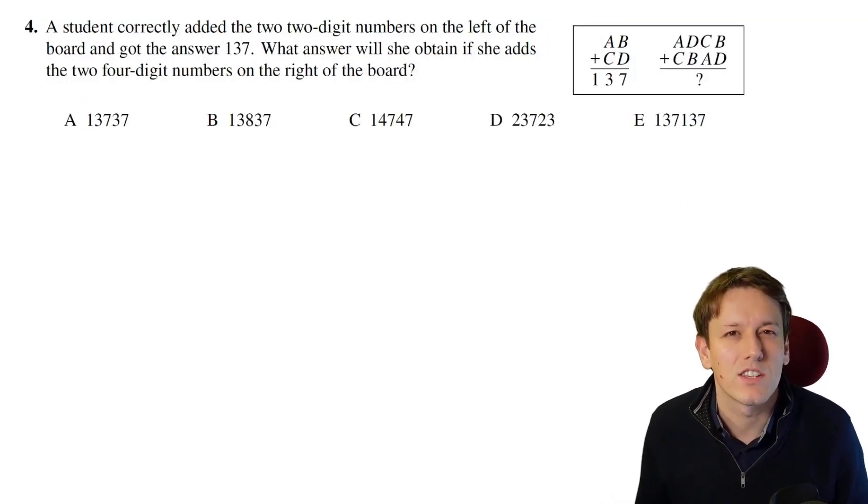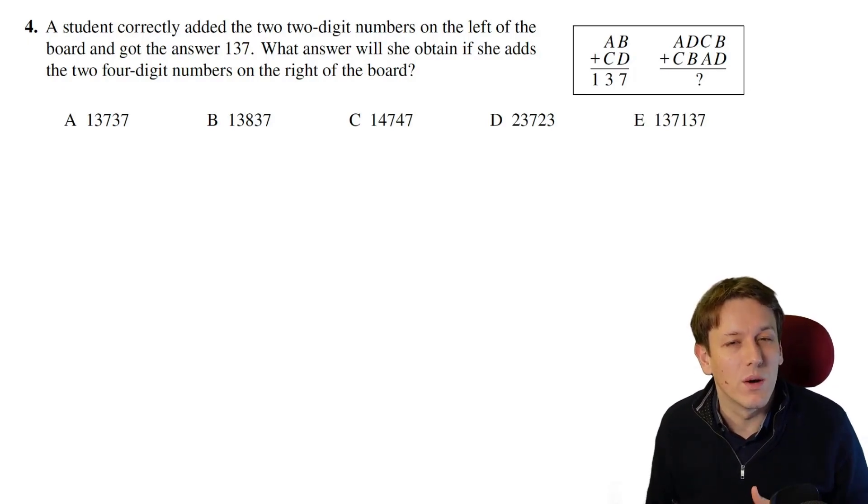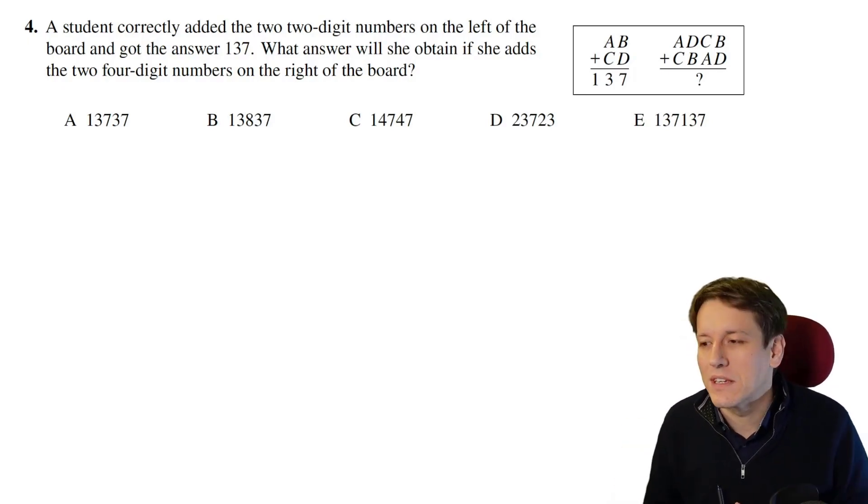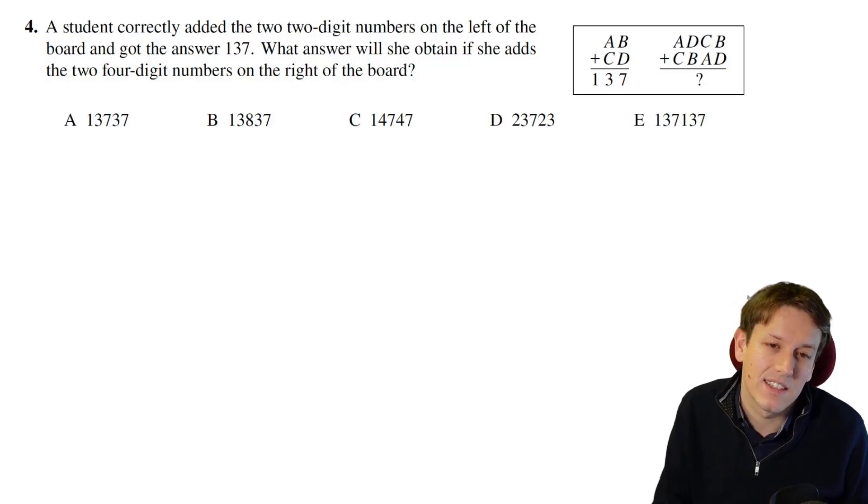This is one of those interesting maths challenge questions where you can get away with not doing it properly. If there is an answer to this question, it must work for all values of A, B, C, and D where AB plus CD equals 137. It doesn't tell us that A, B, C, and D have to be different. For any choice of A, B, C, D that adds to give this, we're going to get the same answer, so you can just pick something that works.